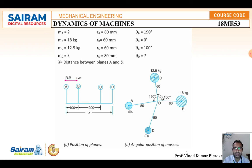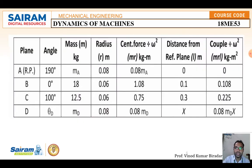A to B is 0.1 m and B to C is 0.3 m; A to D is unknown (X). Now form the tabular column with columns: plane, angle, mass, radius, centrifugal force, distance from reference plane, and couple. Assume B as the reference plane. Radii in meters: 0.08, 0.06, 0.06, 0.08. Centrifugal force = mass × radius, so for B: 18 × 0.06 = 1.08.